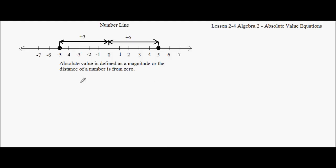First of all, we'll talk about the definition of absolute value. Absolute value is defined as a magnitude — it's how big something is. So negative 10 has a magnitude of 10, and 10 positives also has a magnitude of 10.